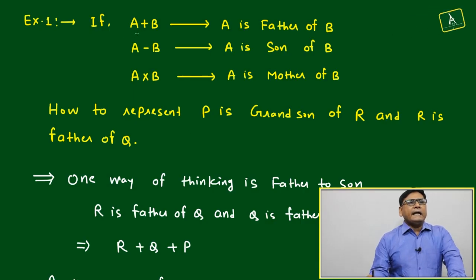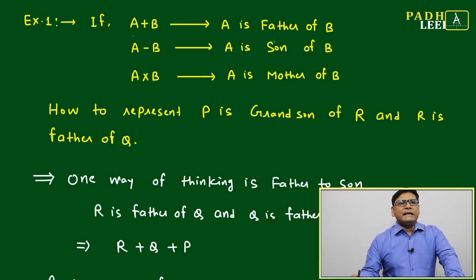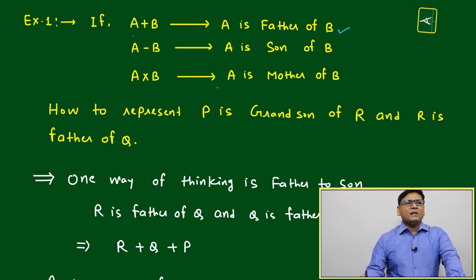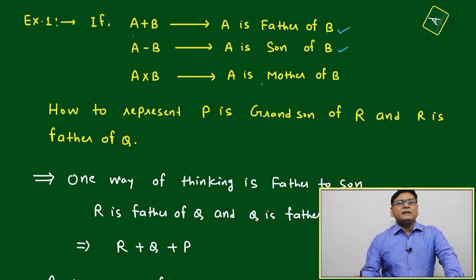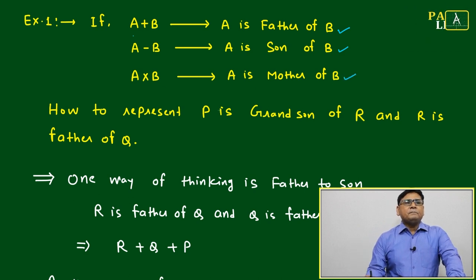Suppose example number one: A plus B represents A is father of B, A minus B represents A is son of B, and A multiplied by B represents A is mother of B.